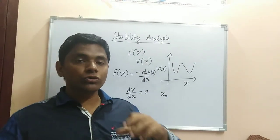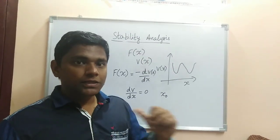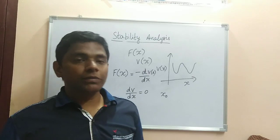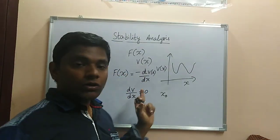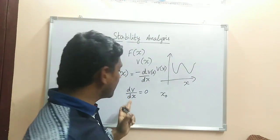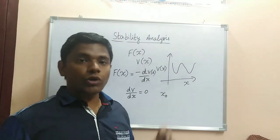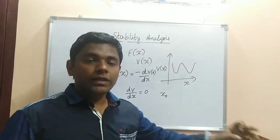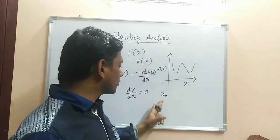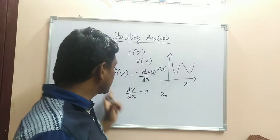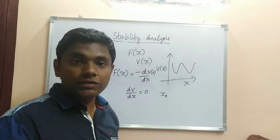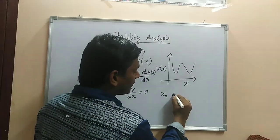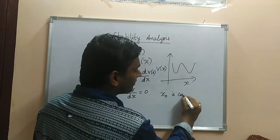Whether it is stable or unstable equilibrium is determined as follows: first take the gradient of the potential energy, dV/dx, and equate it to zero. You will get the particular value of x at which this equation holds. That value of x is denoted as x₀ and is called the equilibrium point.